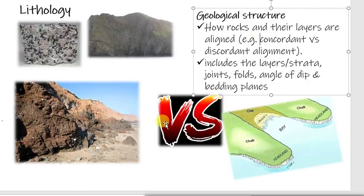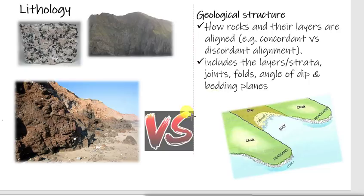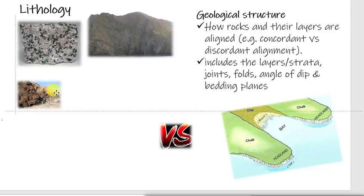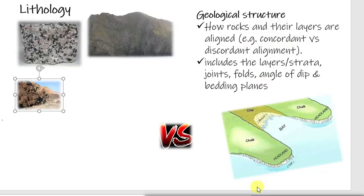However, geological structure, on the other hand, is there's a little bit more to it than just rock type. We want to think about how are these rock types aligned — are they layered like a cake? How are they aligned in relation to the coastline? And then there are other different kinds of geological structure, such as layers. Are they jointed rocks? Are the rock bands folded? What is the angle of the rock in relation to the sea? Is it sloping towards the sea? Is it sloping towards the land? Is it horizontal? Is it vertical?